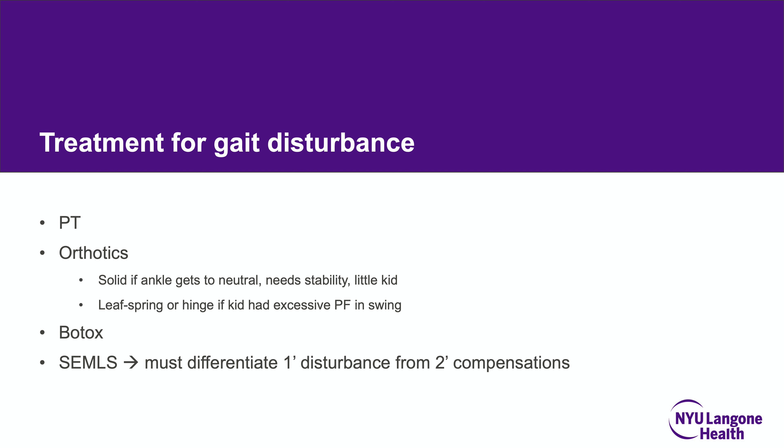In terms of treatment for gait disturbance in cerebral palsy and all neuromuscular conditions, exhaust non-operative management first — a combination of physical therapy, orthotics, and Botox. If insufficient, consider SEMLS: single-event multi-level surgery that addresses all deviations. It is critically important to differentiate the primary disturbance from secondary compensation, as this determines which surgeries are actually performed.